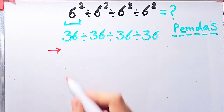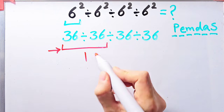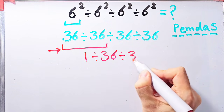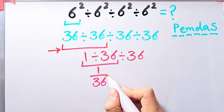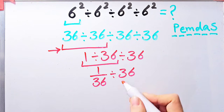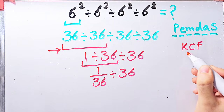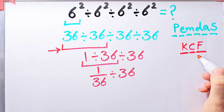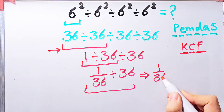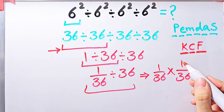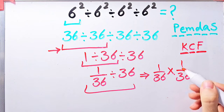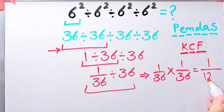36 divided by 36 equals 1. Now the question is 1 divided by 36, then divided by 36. Again we start from the left: 1 divided by 36 equals 1 over 36. Now we have 1 over 36 divided by 36. To solve this we follow the KCF rule: K stands for keep, C stands for change, F stands for flip. We keep the first fraction, change division to multiplication, and flip the second number. So 1 over 36 times 1 over 36 equals 1 over 1296. The final answer equals 1 over 1296.